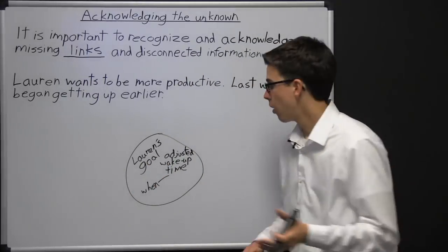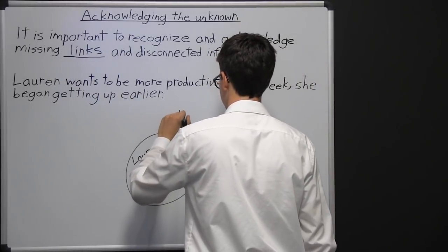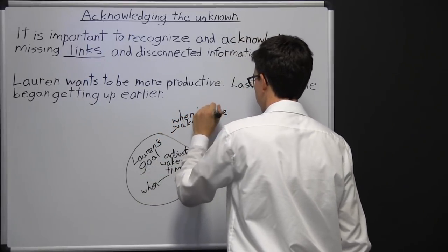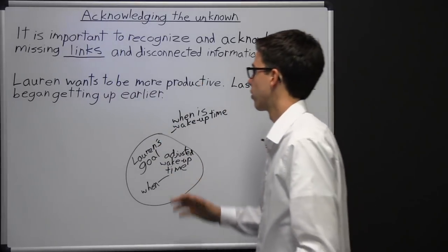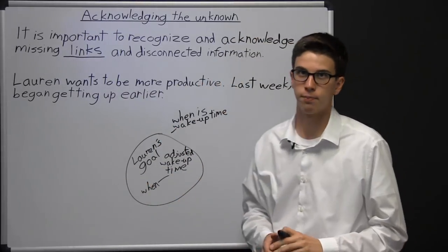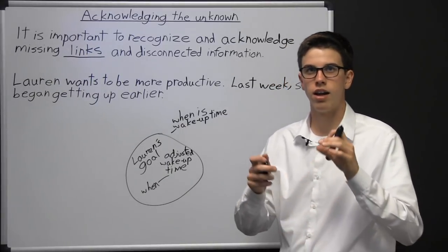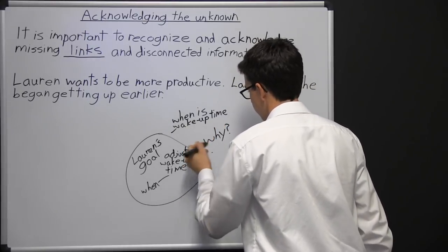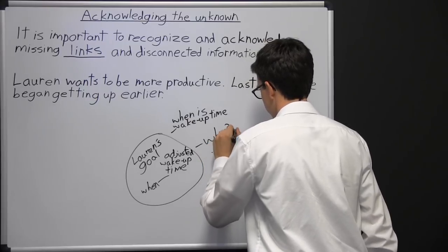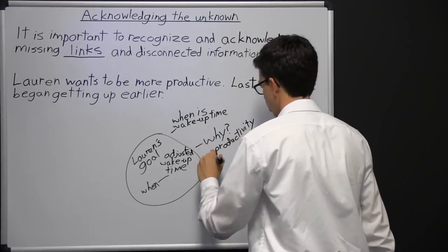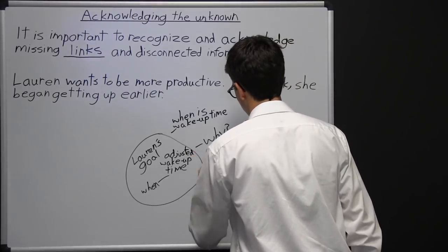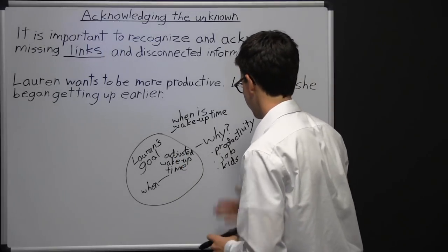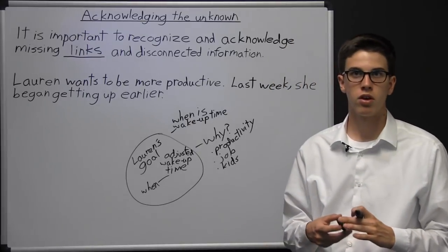What are some things we don't know? We don't know when this new wake-up time is. We just know the wake-up time is earlier, but earlier than what? This could be 9 a.m. or 3:30 a.m. in the morning — we have no idea. We don't know why she changed the wake-up time. Is it to be more productive? Maybe she started a new job that requires her to be there early, maybe she has kids who started getting up earlier, or maybe the school year started again.